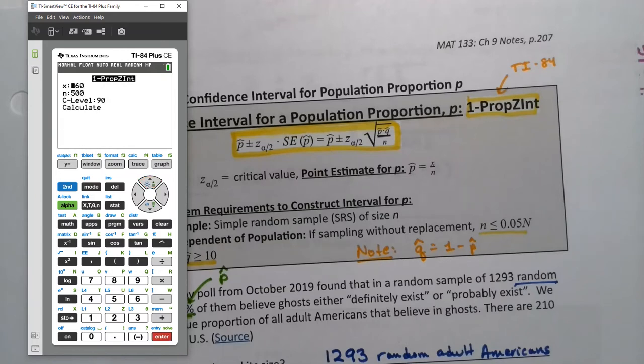And then again, it needs the number of successes, which was 595. And then it needs the total number, which is 1293. It wants to know my confidence level, which actually was 90. So you can type either 90 or 0.90. It'll take it either way. And then I press calculate. It's back to another calculate. No more pasting. We're calculating. If I touch my calculator right now, it all disappears. I've had many students do that, and they're like, no, no, where did it go?